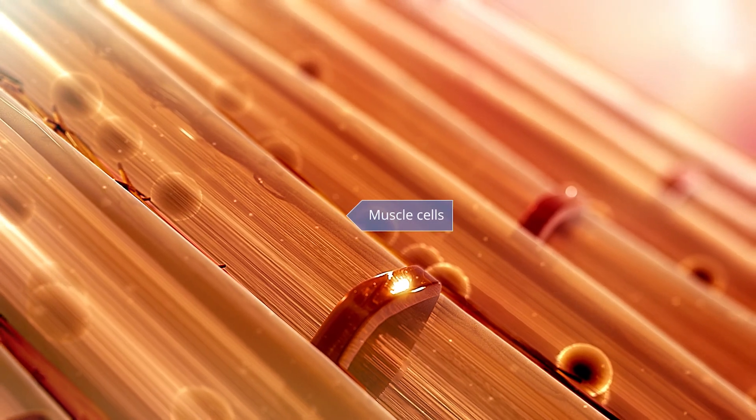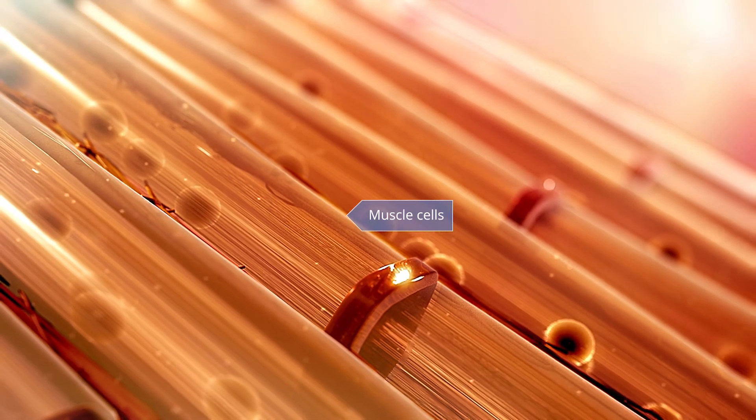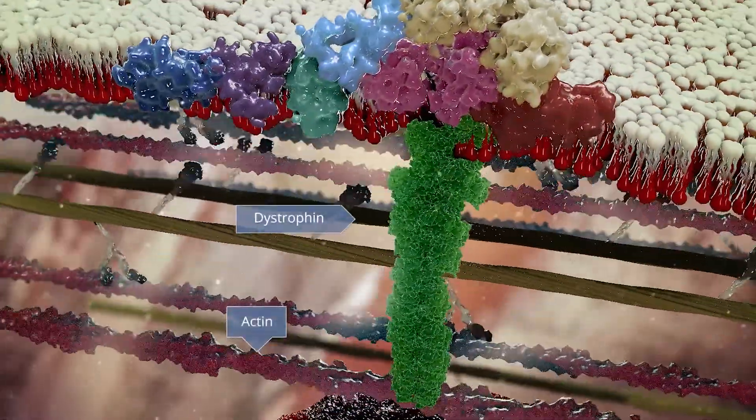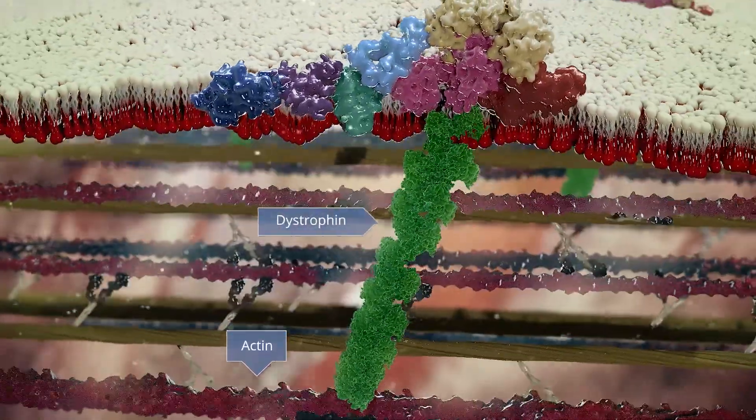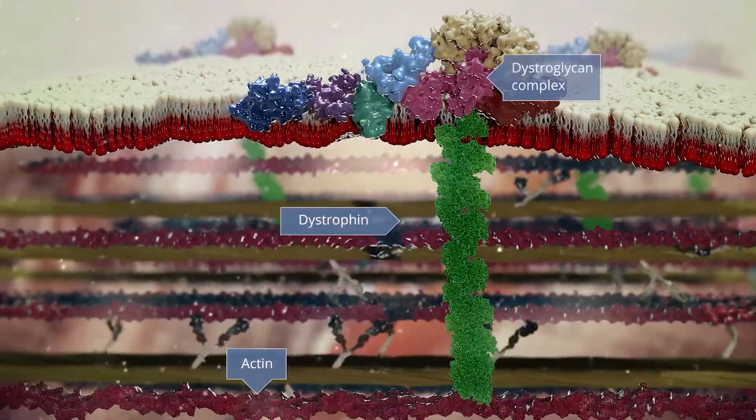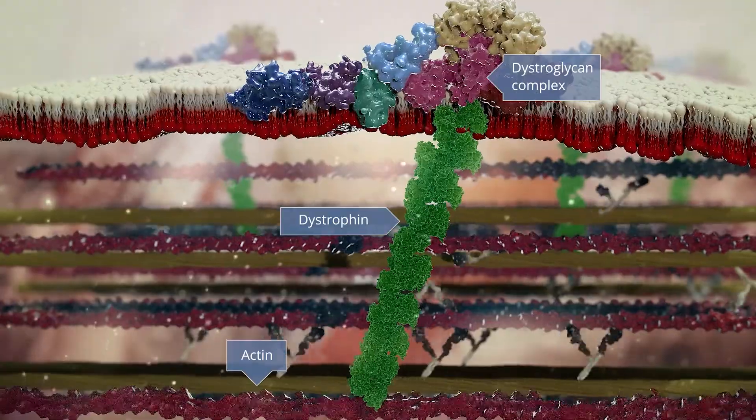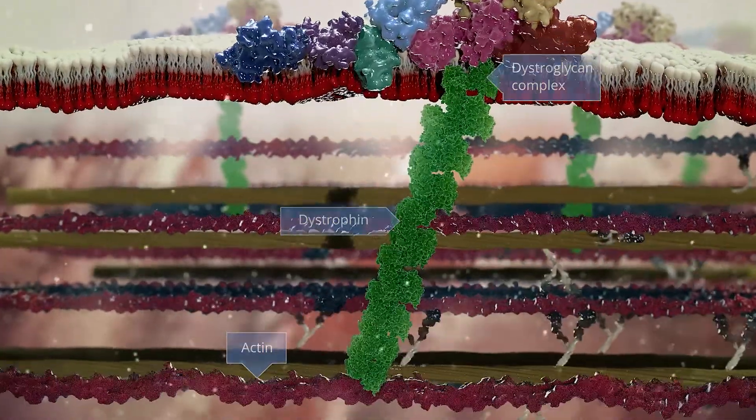Within muscle, the protein dystrophin performs a critical structural role, anchoring the actin skeleton to the sarcolemma membrane in conjunction with other proteins of the distroglycan complex. In doing so, dystrophin is thought to help protect the muscle from strain-related damage during muscle contraction.